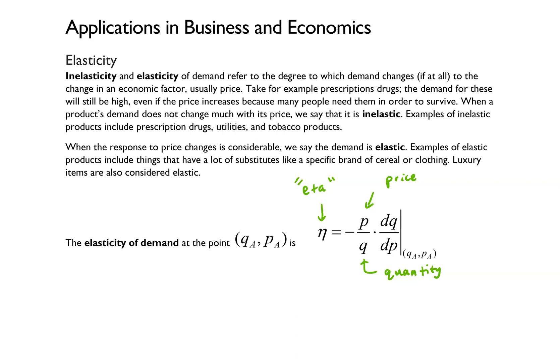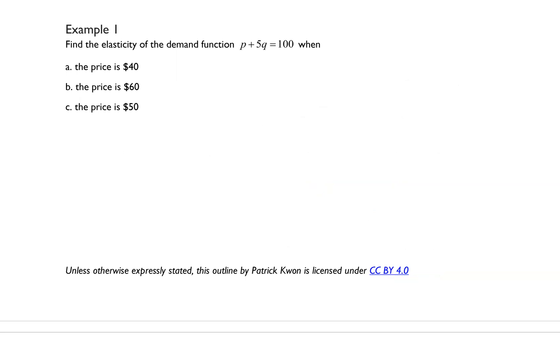Now that looks kind of like an intimidating equation, so let's go over some examples where we work with that equation. Example 1 says find the elasticity of demand function p plus 5q equals 100 when the price is $40, $60, and $50. So let's remind ourselves what the elasticity of demand function is. So we have eta is equal to negative p over q times dq dp, and we want to evaluate that for a specific p and q value. Now, I'm going to solve the original equation that's given for q.